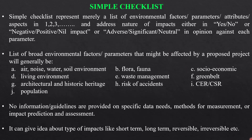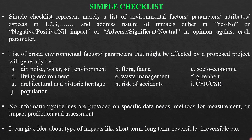The simple checklist method merely represents a list of environmental factors numbered sequentially, and addresses the nature of impacts as yes or no, negative/positive/nil, or adverse/significant/neutral. Broadly, the environmental factors that might be affected include air environment, noise, water, soil environment, biodiversity, corporate environmental responsibility, green belt development, socioeconomic studies, and waste management. However, no information or guidelines are provided on specific data needs, methods for measurement, or impact prediction or assessment.